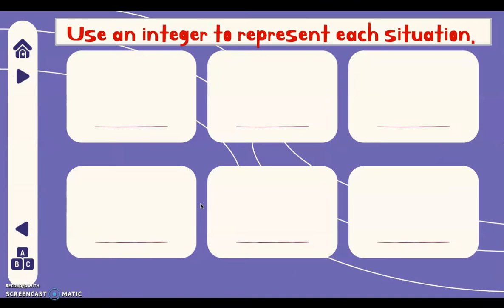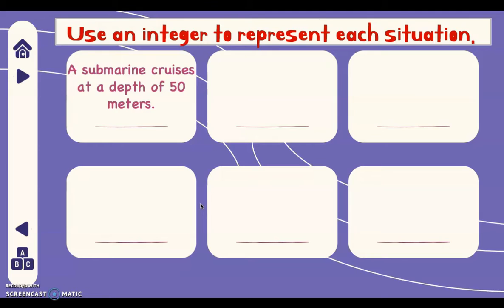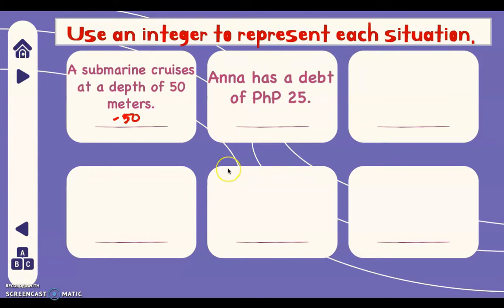Let's have examples to visualize more on integers. Use an integer to represent each situation. A submarine cruises at a depth of 50 meters — our sea level is zero, and since it says depth, it is below sea level, so that means it is negative 50. Another situation: Anna has a debt of 25 pesos. Since Anna owes money, that represents a negative integer, so we have negative 25.